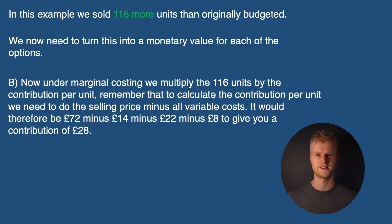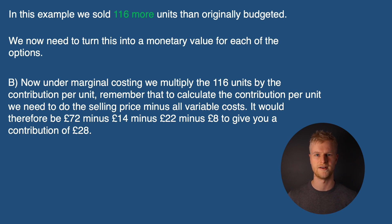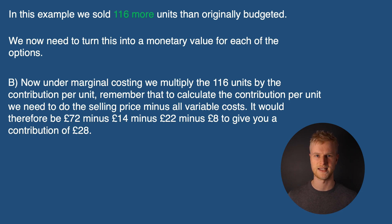Method B — under marginal costing: we multiply the 116 units by the contribution per unit. To calculate contribution per unit we do the selling price minus all variable costs, which would be £72 minus £14 minus £22 minus £8 to give us a contribution of £28.